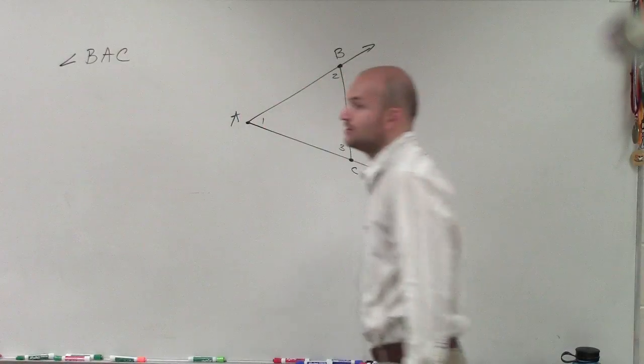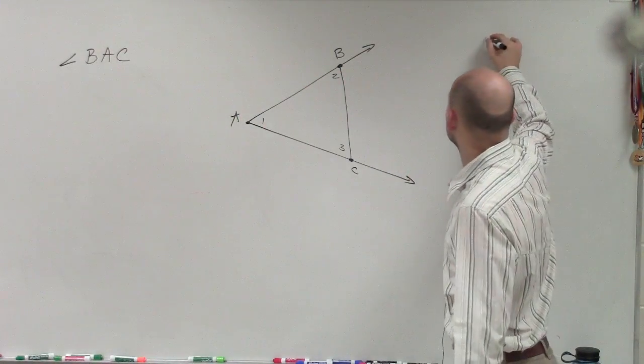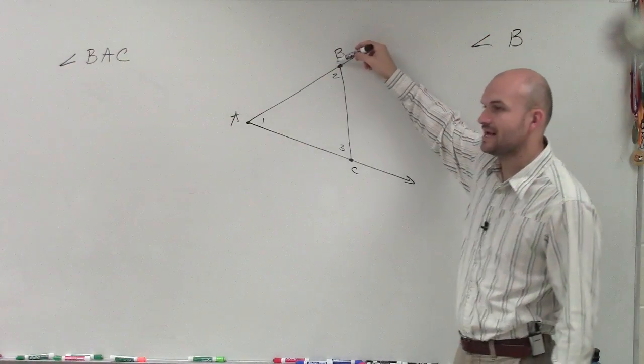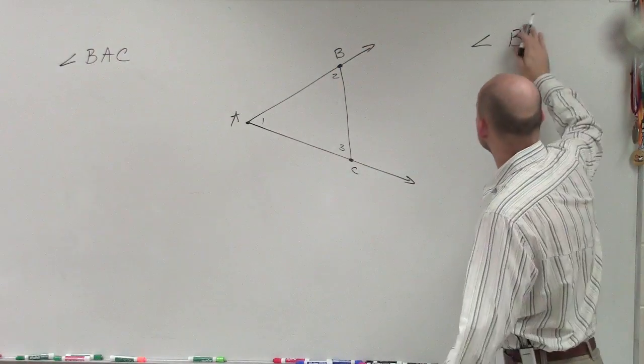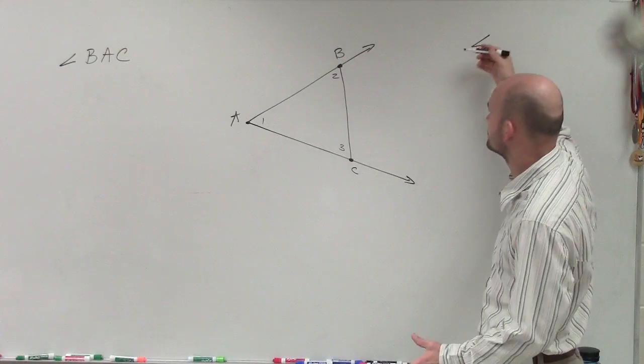Another way to label an angle is we can just use what the point is. So I could say angle B. If you look at angle B, you can see that B goes down to A and down to C. Technically, we're going to use the angle at the vertex.